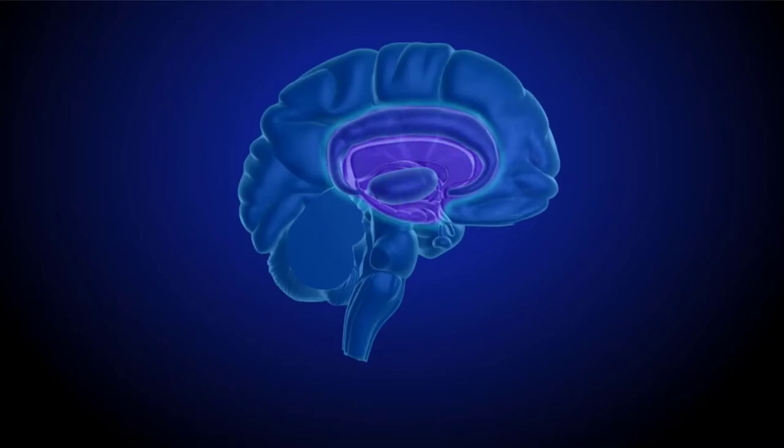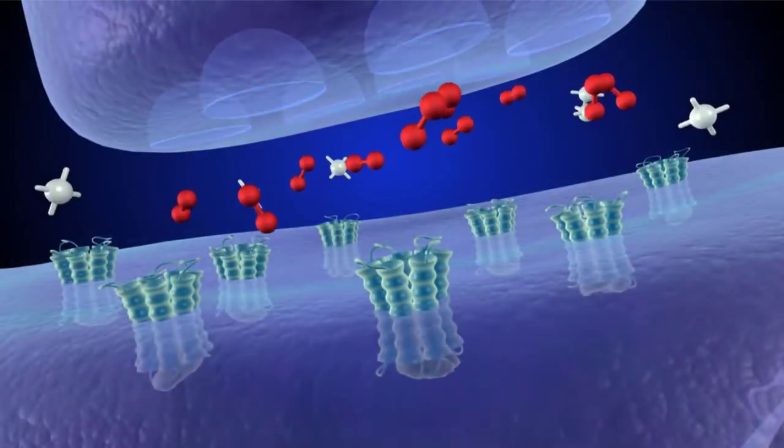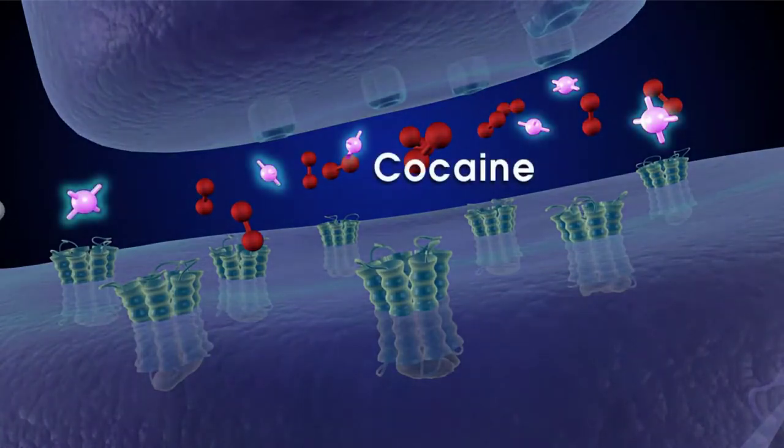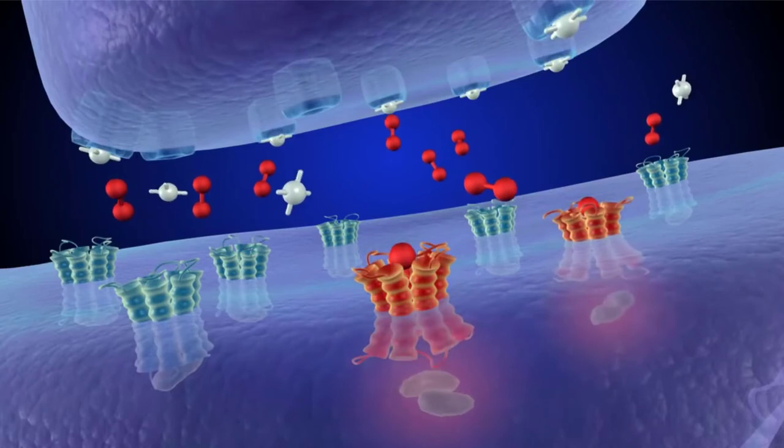All substance abuse and some highly stimulating behaviors such as sex and gambling stimulate or modify the dopamine cycle. When someone first uses cocaine, for example, the drug quickly enters the brain where it blocks the transporters on the presynaptic cell.